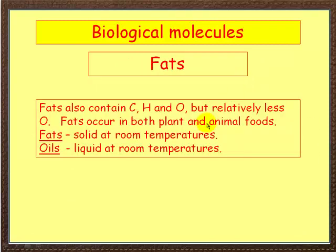Let's go on now to fats. Fats also contain those three elements: carbon, hydrogen, and oxygen. But compared to carbohydrates, they contain relatively less oxygen. They occur in both plant and animal foods. The difference between fats and oils is that fats are solid at room temperature and oils are liquid - so at about 20 degrees Celsius, oils are liquid and fats are solid. That's all the difference is.